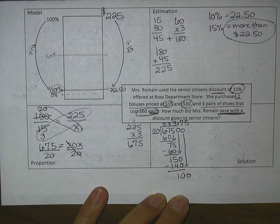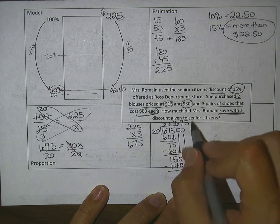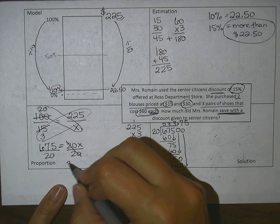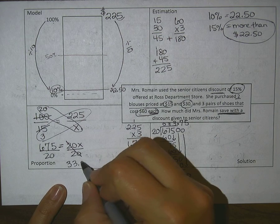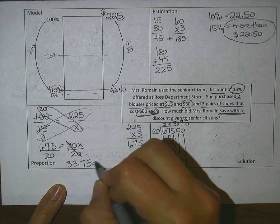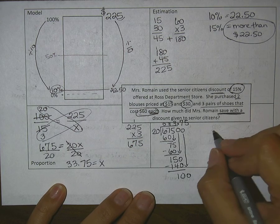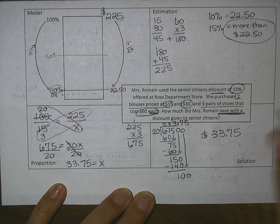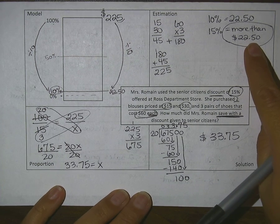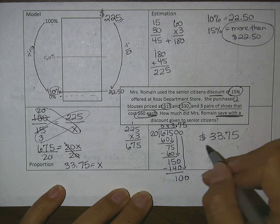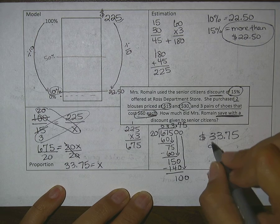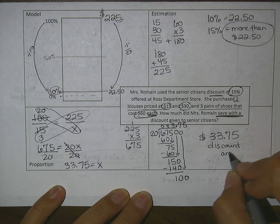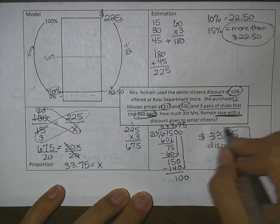So my discount amount ends up being $33.75 equals x. Is that a reasonable answer? Well, let's compare that to my estimated, and I said it has to be more than $22.50. So I'm going to say yeah, that makes sense, and this is the discount amount.